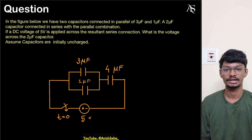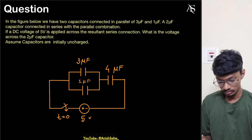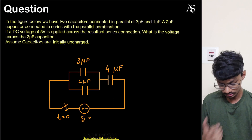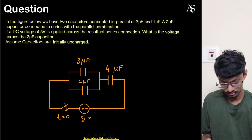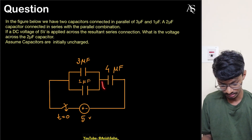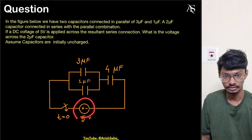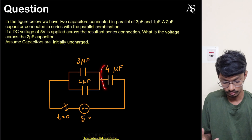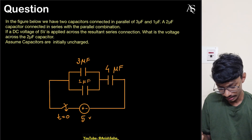Hello everyone, I'm Anish and welcome to my channel. Today we'll solve this interesting question on capacitors. Basically what this question is asking us to find is the voltage across this capacitance if a 5-volt voltage is applied at t equals zero. So what will be the voltage across this capacitance?